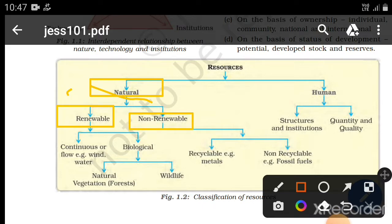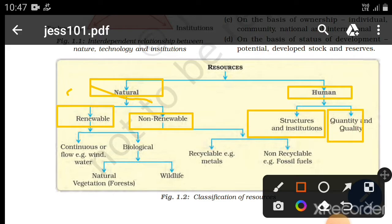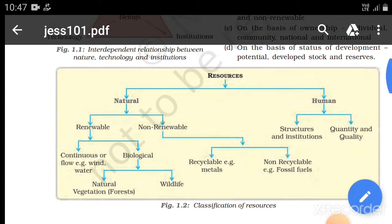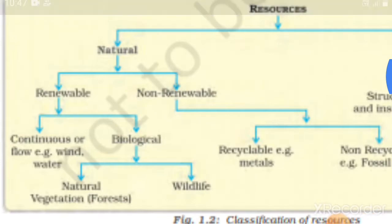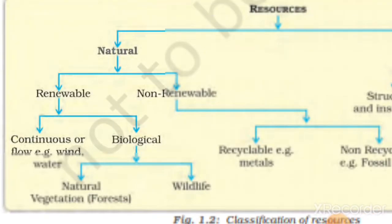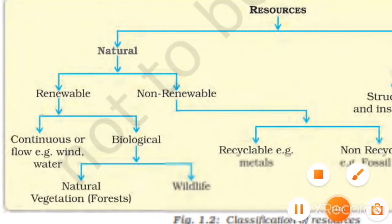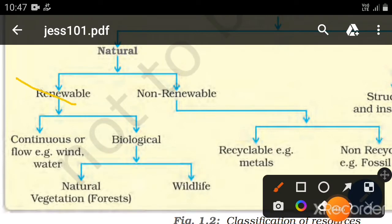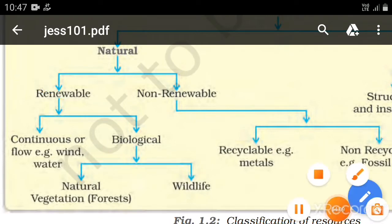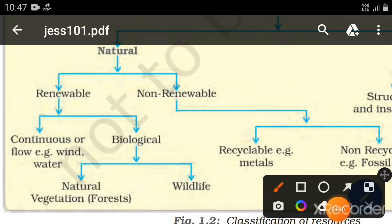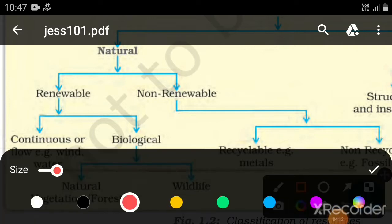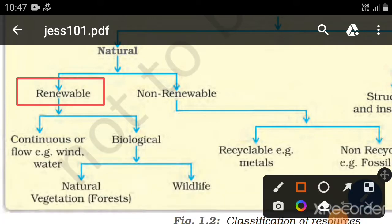We will focus on natural resources. Let's start with the first type — renewable resources, which is the easiest. We'll understand what renewable resources actually are by looking at examples like forest energy, tidal energy, biomass, clouds, mountains, and geothermal energy.